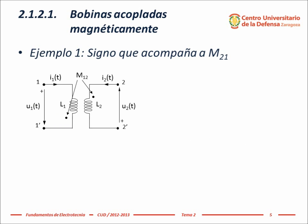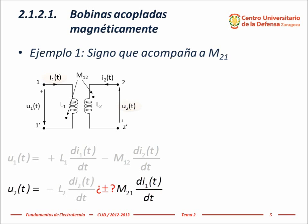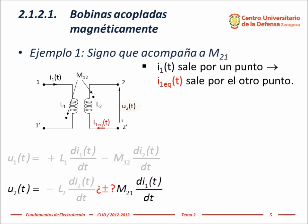Sign of the term containing the mutual induction coefficient M sub 2 1. We look at the reference of the current flowing through coil 1, the reference voltage across coil 2, and the corresponding terminals of both coils. The current in coil 1 outputs from the terminal marked with the point. The equivalent current circulating in coil 2 creates the same effect as the current I sub 1 flowing through coil 1, and both currents output from the terminals with the point mark.